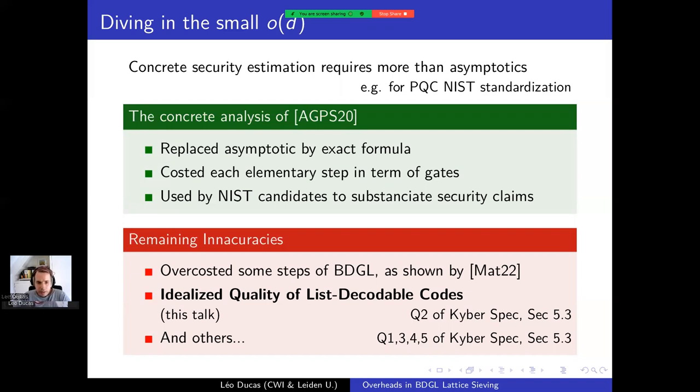However, it remains some inaccuracies in those estimates. For example, recently shown by Matzov there have been some steps of BDGL that had been over-costed. But here in this talk, I want to focus on another inaccuracy, more precisely the fact that some list decodable codes and their quality have been idealized for the analysis. And I want to look at how much the real list decodable codes differ from this idealized version and how much we lose on efficiency because of this non-ideal behavior. This was mentioned already in the Kyber specification as question 2 in section 5.3. However, I will not discuss the other inaccuracies today. I provide you a solution with Q2.